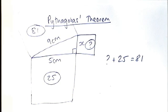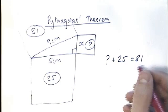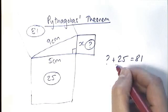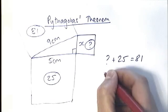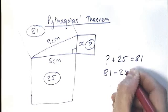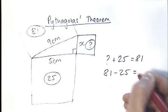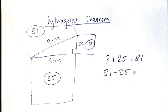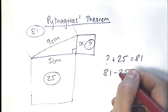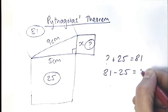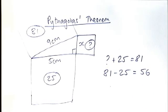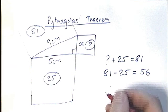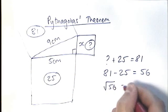That tells you that you're going to do a subtraction. To find that missing area, you do 81 take away 25, which gives you 56. Then when you square root 56, you get your answer for the missing side length.